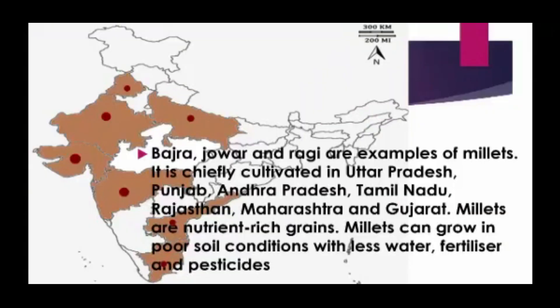Bajra, Jowar, and Ragi are examples of millets. Millets are chiefly cultivated in Uttar Pradesh, Punjab, Andhra Pradesh, Tamil Nadu, Rajasthan, Maharashtra, and Gujarat. Millets are nutrient-rich grains and can grow in poor soil conditions with less water, fertilizer, and pesticides.